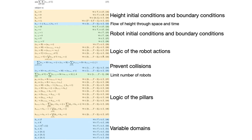Let's take a look at the CP model in more detail. You can see that the CP model is much more complex. The yellow constraints at the top state the height initial conditions and boundary conditions. Then we have the blue constraints which state the flow of height through space and time. Next we have the green constraints which are the robot initial and boundary conditions. Then we have the yellow constraints which model the logic of the robot actions — the picking up, moving, and so on. Next we have the blue constraints which prevent vertex collisions and edge collisions, the same as in the IP model. The green constraints limit the number of robots. And finally we have the yellow constraints which model the logic of the pillars — growing and decreasing the height of each pillar. The blue constraints at the end are just the variable domains.